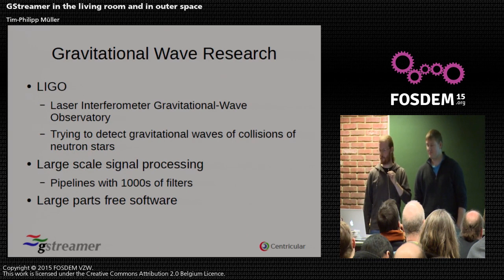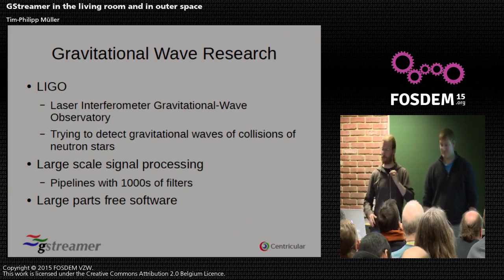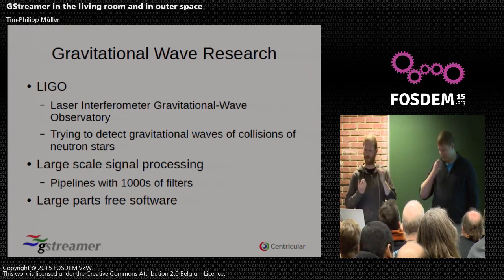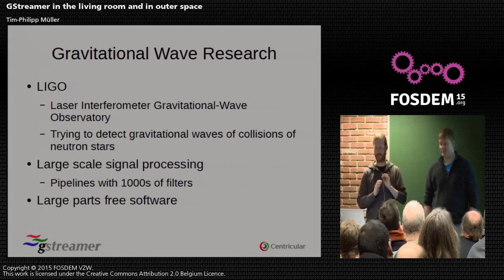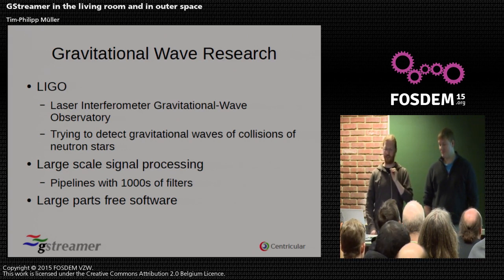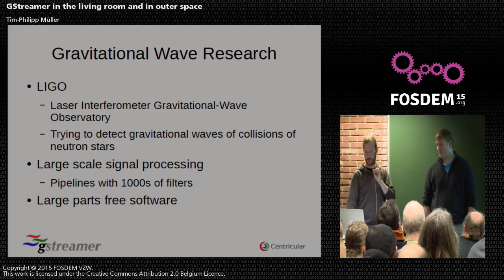GStreamer is used for gravitational wave research — for the LIGO project, which is the Laser Interferometer Gravitational-Wave Observatory. They are trying to detect gravitational waves from collisions of neutron stars or rotating neutron stars. They have large-scale signal processing pipelines using GStreamer with thousands of filters, and they need perfect synchronization. If after 30 hours there's a drift of one sample, they will complain — and they've already fixed quite a few bugs like this. Large parts of this are free software.